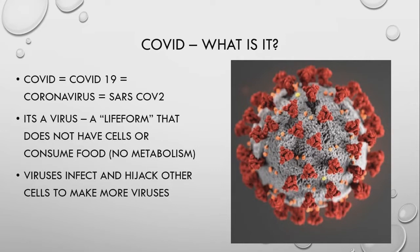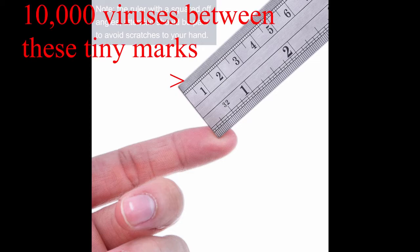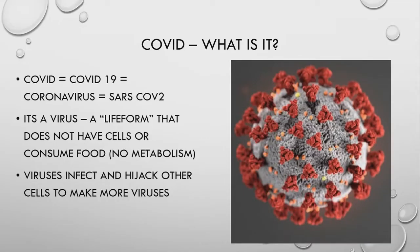How small is it? If you think of the smallest mark on a ruler, that is a millimeter, and you could fit about 10,000 coronaviruses into one of those tiniest little marks on your ruler. So pretty, pretty small. How do viruses live if they're not made of cells and don't eat food for energy? The answer is that they essentially hijack and infect other cells and use those cells to make more viruses. We'll describe that process.